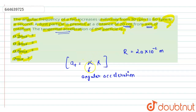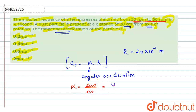We have to find the value of alpha. Alpha is given as delta omega divided by the time taken. Delta omega is omega final minus omega initial, and the time taken is given to be pi seconds.